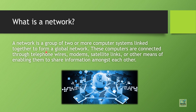Now what is a network? A network is a group of two or more computer systems linked together to form a global network. These computers are connected through telephone wires, modems, satellite links, or other means enabling them to share information with each other. If two or more computing devices are connected to each other through any medium — wired or wireless — then they are in a network.